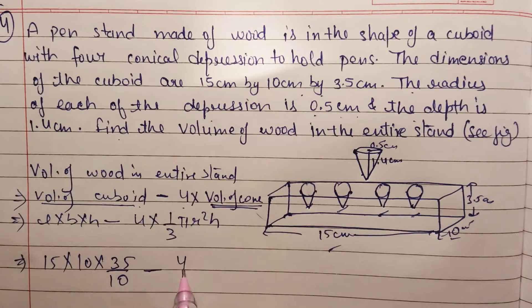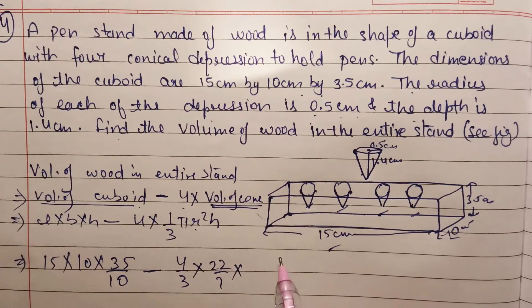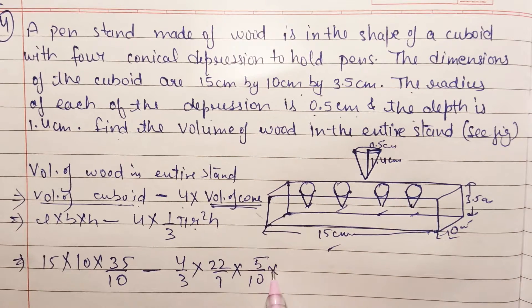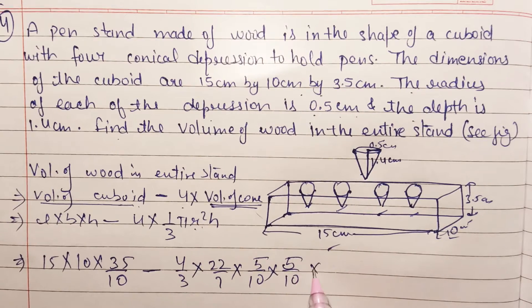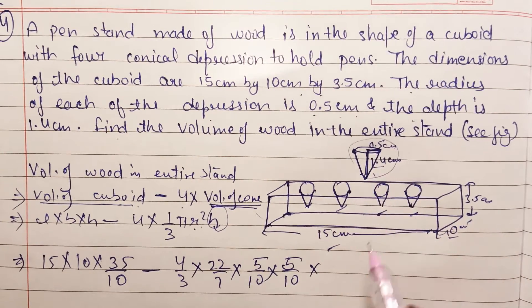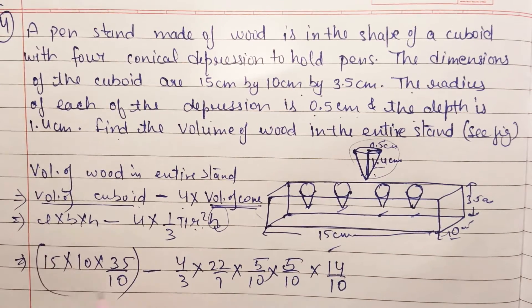Minus, I can write: four by three into pi value 22 by 7 into radius. Look, the radius of cone is 0.5, so I can write 5 by 10, square so it will come twice 5 by 10. Multiply height - height of cone is this depth which is height, 1.4, so I can write 14 by 10. Whatever is canceling, I will cancel it.